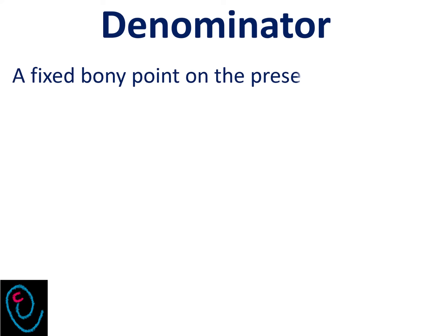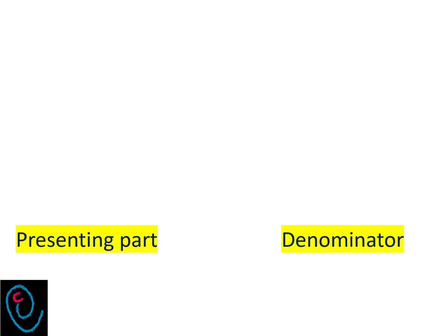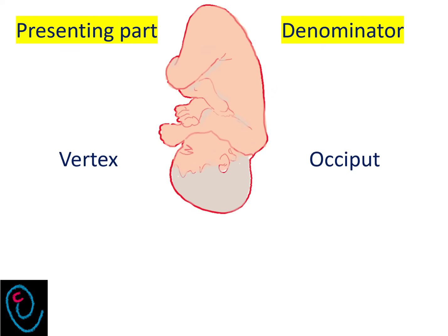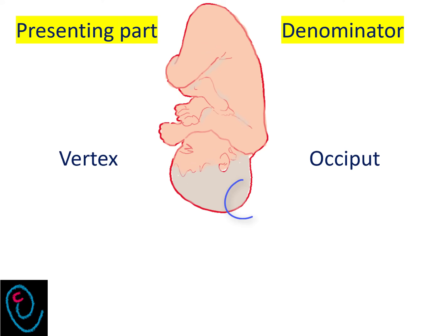Denominator is a fixed bony point on the presenting part. Now, I will write the presenting part on the left side and its denominator on the right side. In vertex presentation, occiput is the denominator.